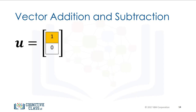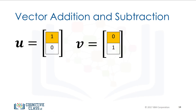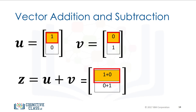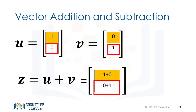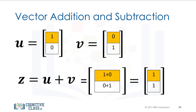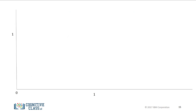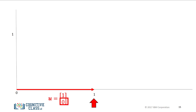Vector addition is a widely used operation in data science. Consider the vector u with two elements, distinguished by different colors, and the vector v with two components. In vector addition, we create a new vector z. The first component of z is the addition of the first components of vectors u and v. Similarly, the second component is the sum of the second components of u and v. This new vector z is a linear combination of vectors u and v. Representing vector addition with line segments or arrows is helpful. The first vector is represented in red, pointing in the direction of its two components. The first component is 1, so the arrow is offset one unit from the origin in the horizontal direction.